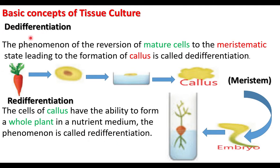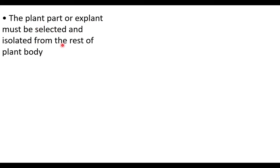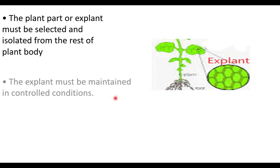Plant cells are totipotent because of de-differentiation and redifferentiation. When plant cells are cultured in a culture medium they become meristem, and the meristem develops into the whole plant. De-differentiation and redifferentiation together give totipotency to plant cells. The explant must be selected and isolated from the rest of the plant body and transferred into nutrient medium, where it is maintained under controlled conditions.